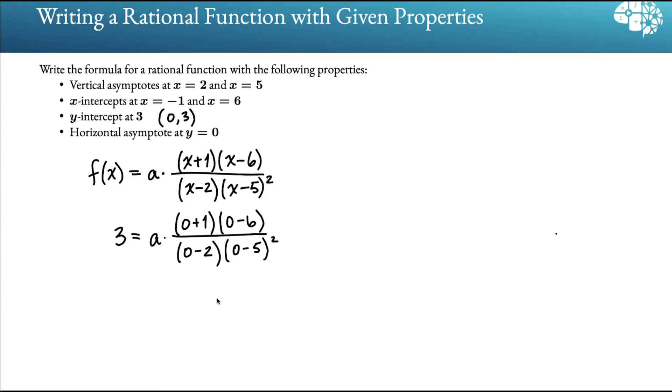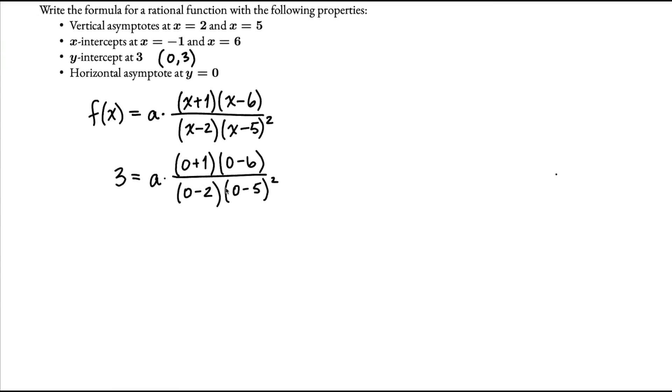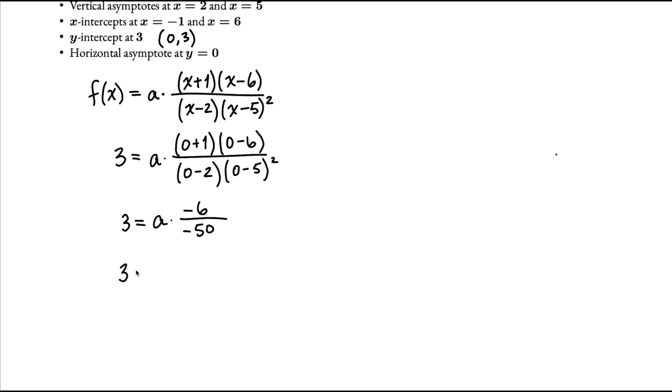Now we're going to go through and just simplify this expression here. I have 3 equals a times, this is 1 times negative 6, which is negative 6, over, this is negative 2 times 25, which is negative 50. Now to simplify this, I have 3 equals a times a negative divided by negative is positive, and this fraction reduces to 3 over 25.